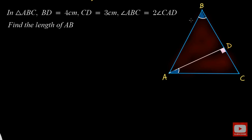We have a triangle ABC where the length of BD is 4 cm, length of CD is 3 cm. And it is given that the angle ABC, that is this angle B, is twice the angle CAD. Which means, if I take this angle CAD as alpha, then angle ABC is twice of that alpha, that is 2 alpha.